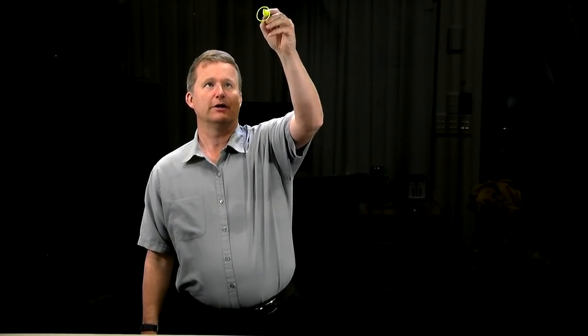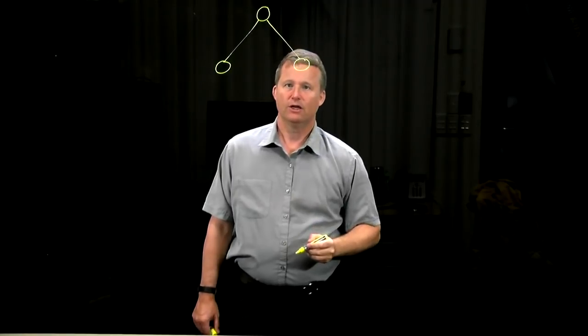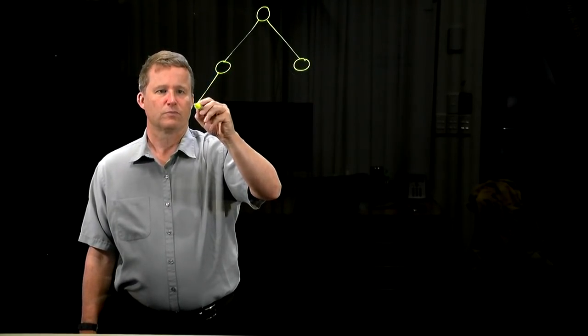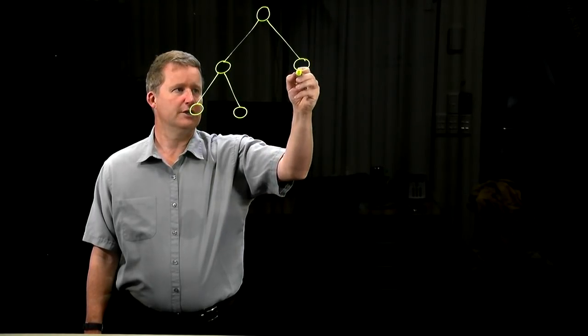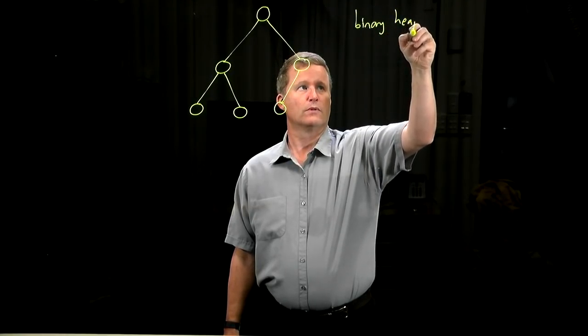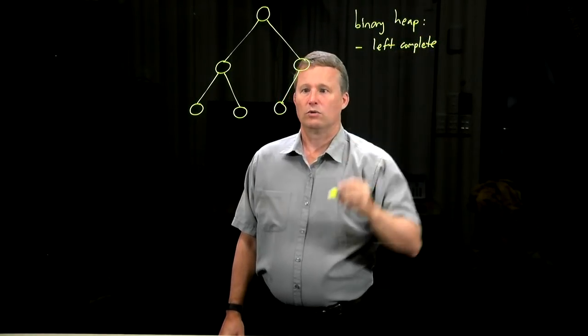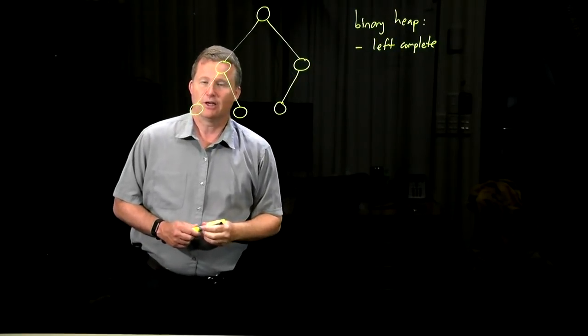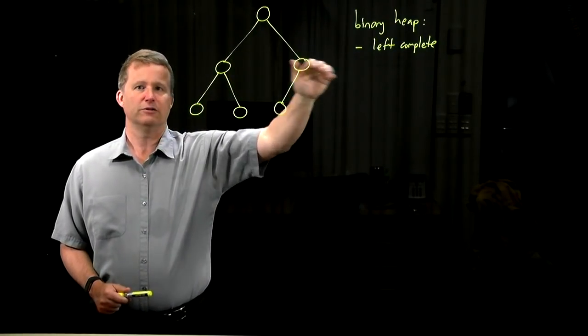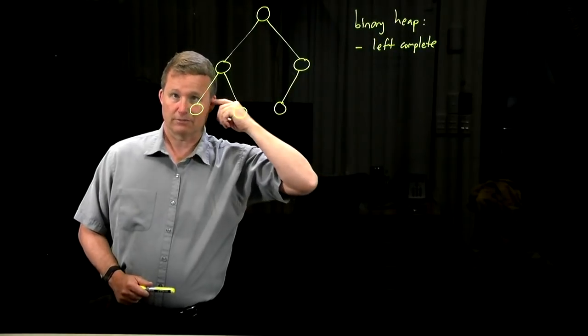Well it turns out that we can find a data structure where there's a nice trade-off between the insertion and the deletion. And what we're going to talk about is what's called a binary heap. So it's a type of binary tree, special type of binary tree, whose structure is very constrained. The shape of the tree is what's called left complete. So it's a binary heap. It must be left complete. Which means basically that all the levels of the tree are filled up completely, until we get to the last level where there might be some missing.